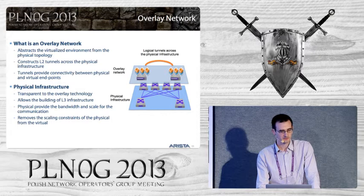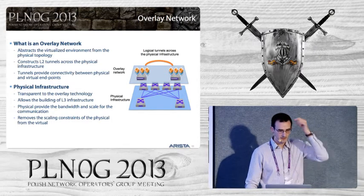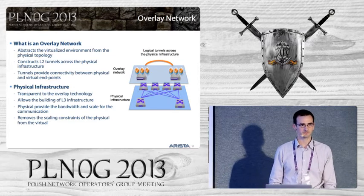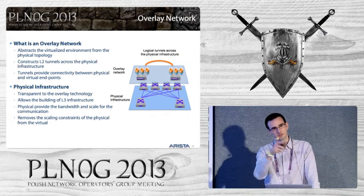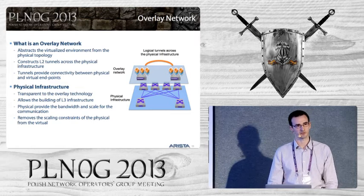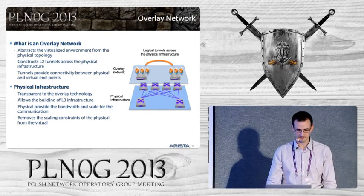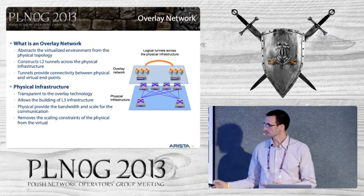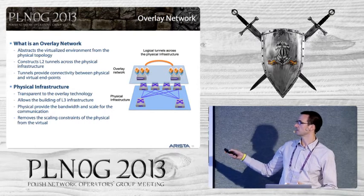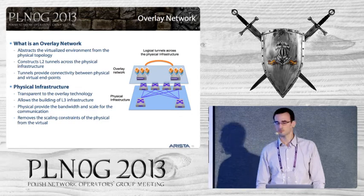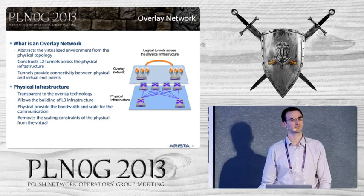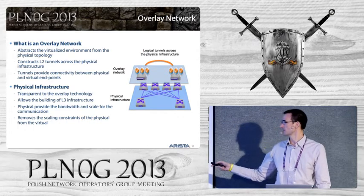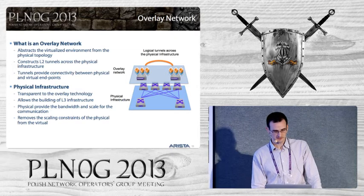The overlay network abstracts the virtualized environment from the physical infrastructure so that different nodes — virtual or physical — can communicate using layer 2 across the overlay network, traversing transparently the underlying layer 3 fabric that just carries IP packets. The physical layer 3 fabric has total transparency: it only sees IP packets going from source to destination, unaware of whether two layer 2 nodes are communicating. Nodes in the overlay just exchange Ethernet frames, unaware that the underlying network is layer 3.